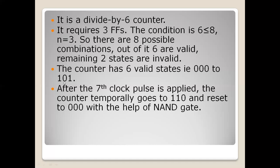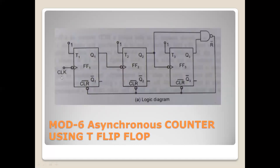After state 101 is reached, the counter must go to 000 and should not go to 110 or 111. After the seventh clock pulse, the counter temporarily goes to 110 for a fraction of a second and resets to 000 with the help of a NAND gate. Three T flip-flops are used; when used as a counter, all T inputs are held at 1. Since it is an asynchronous counter, the external clock pulse is given only to the first flip-flop, whose output clocks the second, and the second's output clocks the third.